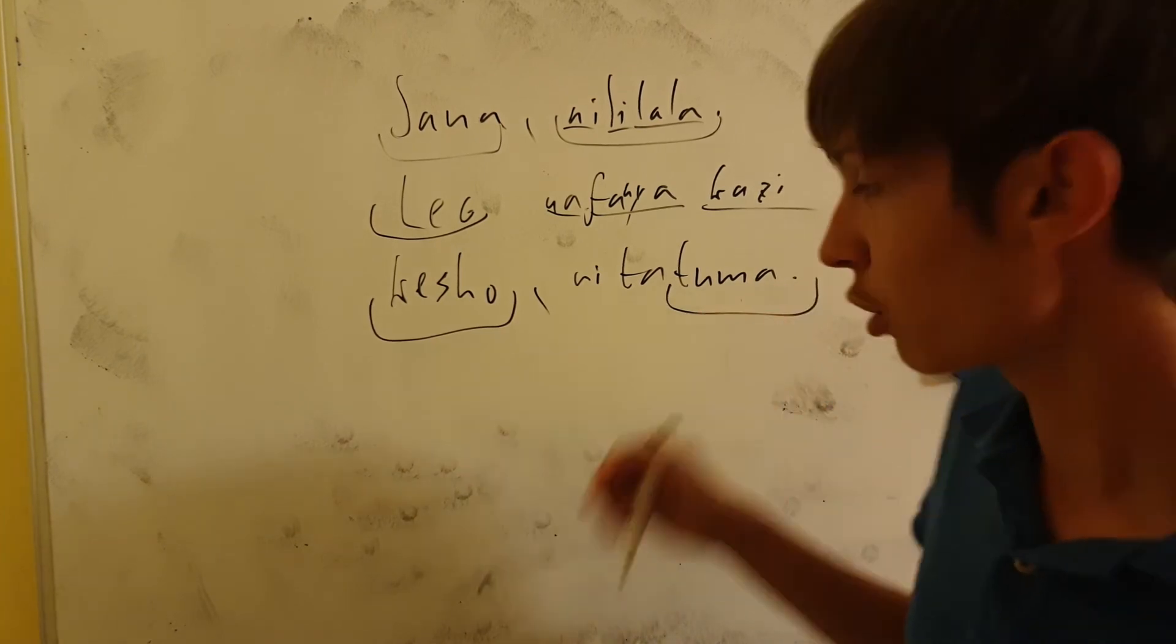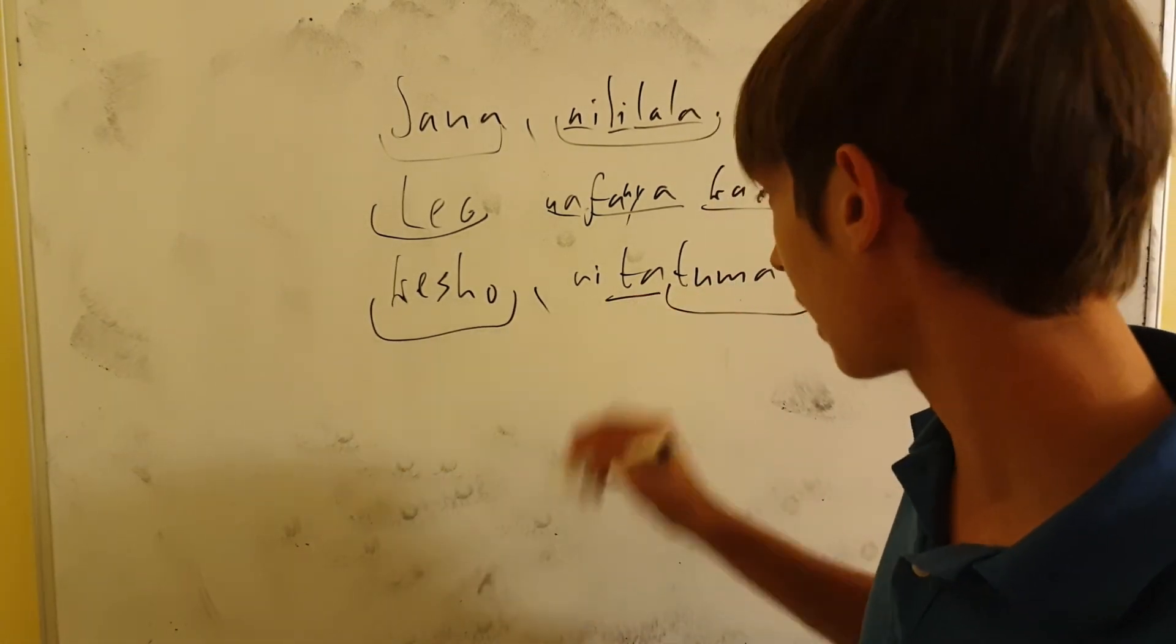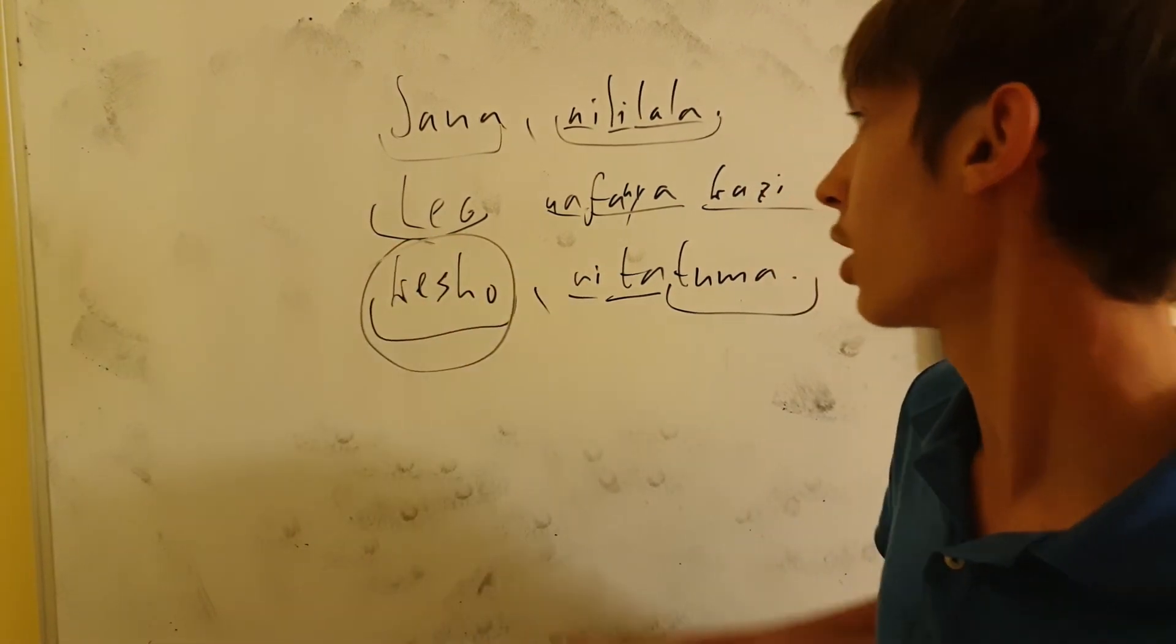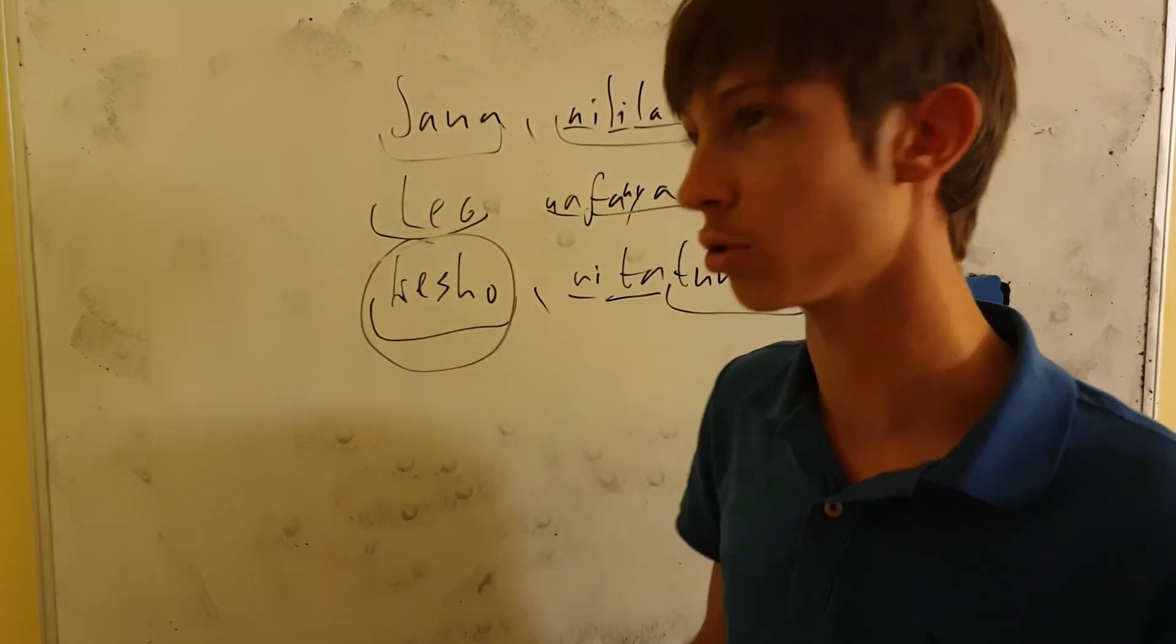Whatever context this might be in. Tuma is send, ta is future tense and ni is a first person marker. But what's important is kesho is tomorrow. So, Jana is yesterday, Leo is today and kesho is tomorrow.